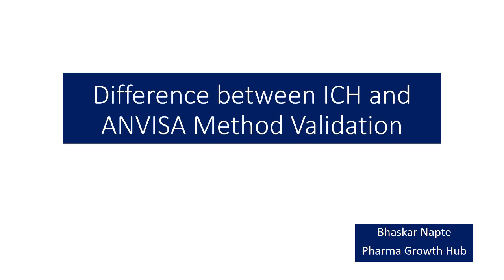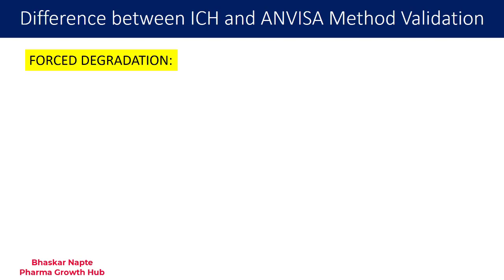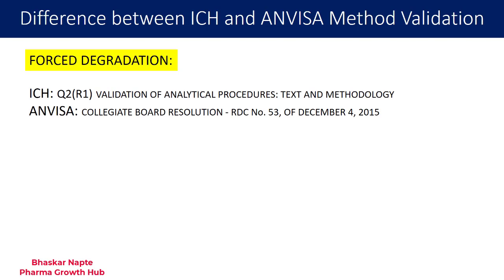Let us start our discussion with the first parameter where the difference lies, and that is forced degradation. ICH and ANVISA have certain differences when it comes to conducting the forced degradation study during method validation. The ICH guideline I am referring is Q2R1 — Validation of Analytical Procedures: Text and Methodology. For ANVISA, the guideline is Collegiate Board Resolution RDC No. 53 of December 4, 2015.